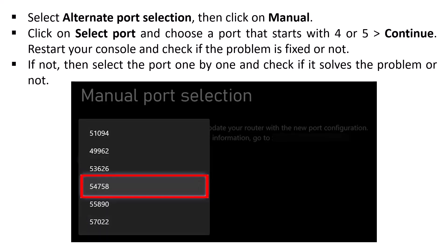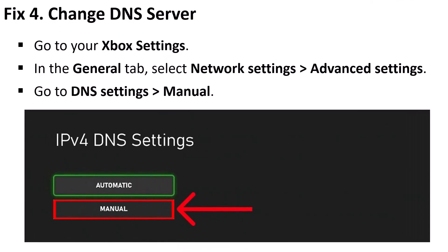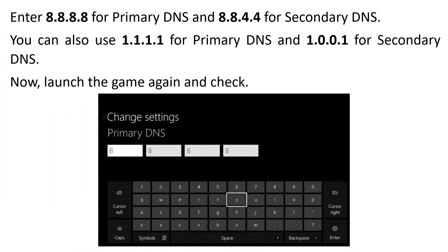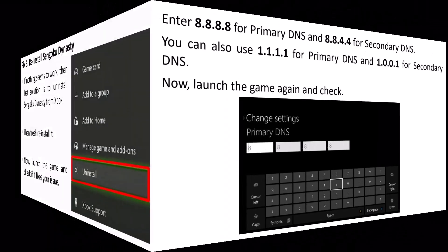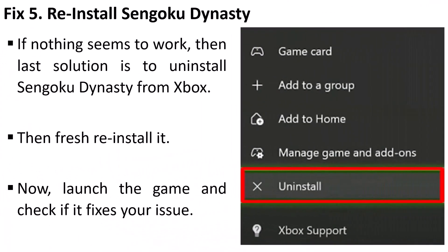Change DNS server — this is the fourth solution. Go to your Xbox Settings, in the General tab select Network Settings, Advanced Settings, go to DNS Settings, Manual. Now enter 8.8.8.8 for the primary DNS and 8.8.4.4 for the secondary DNS. Launch the game and check. If that doesn't work, repeat the process: in primary DNS type 1.1.1.1 and in secondary DNS type 1.0.0.1, then launch the game and check.